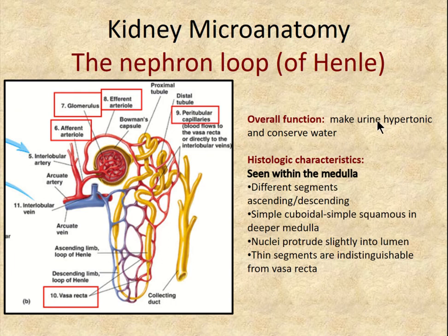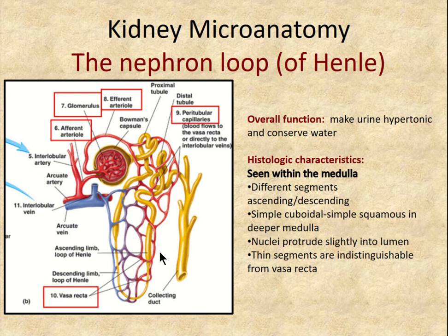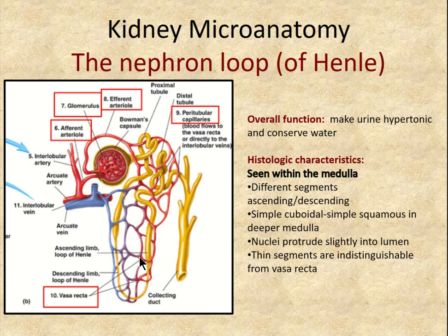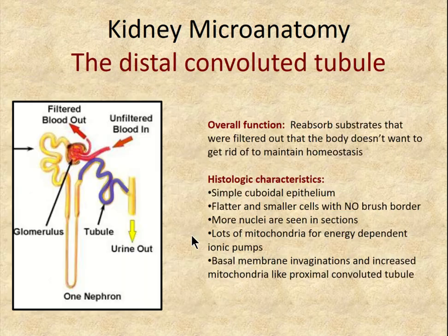The overall purpose of the loop of Henle is to concentrate urine and reabsorb water from the blood plasma filtrate. Permeability changes dramatically from the descending to ascending limb — water is very permeable in the descending limb but the ascending limb is impermeable, so the urine becomes more concentrated. Everything taken out can be reabsorbed into the vascular system via the vasa recta network right outside the loop of Henle. Specifics are covered in physiology.